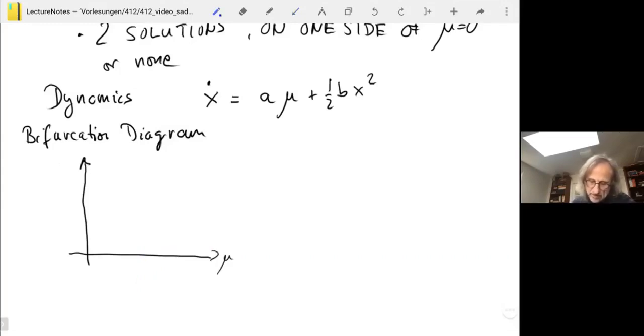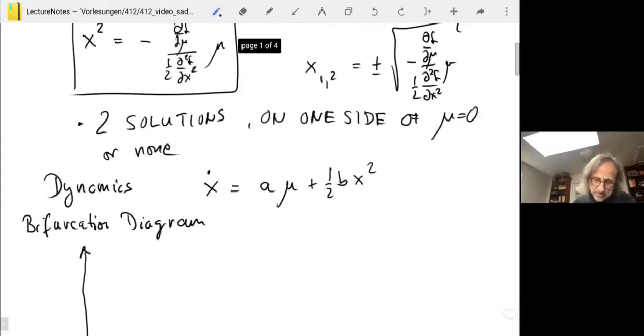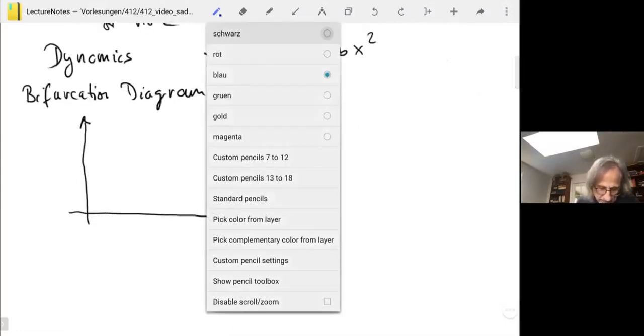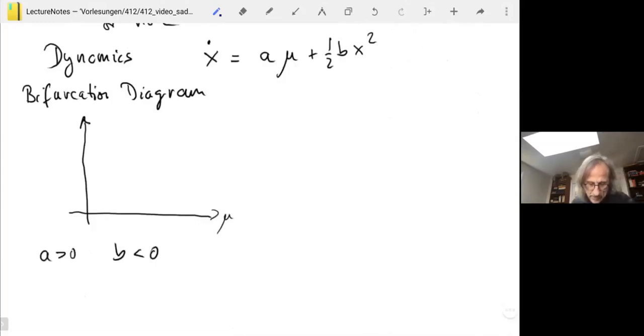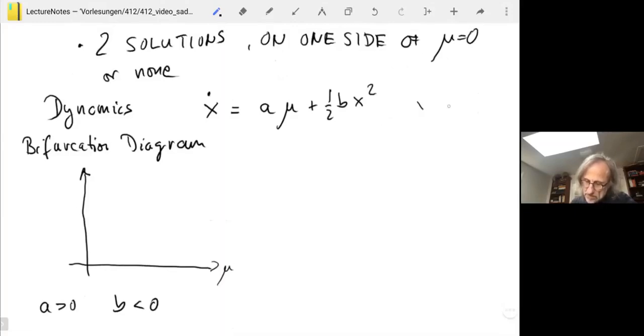On that phase line, we have the dynamics and fixed points and stuff like that. We put all these phase lines next to each other, and that's how we get the whole bifurcation diagram. So what do we have? Depending on the sign of a and b, let's say we have a is positive and b is negative, just to pick a case. Then we have x12 equals the square root of minus a over 2b times mu. In this case, a over b is negative, so we have a solution if mu is positive. We have a parabolic shape here for the square root. So these are the fixed points.